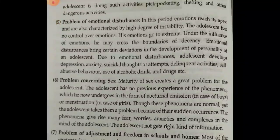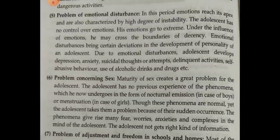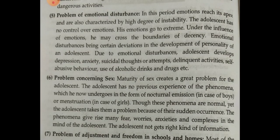Problem number five: problem of emotional disturbance. In this period, emotions are at their peak and are highly unstable. Adolescents are emotionally unstable - they cannot control their emotions, which are very extreme. Due to these emotional disturbances, the adolescent becomes a victim of depression, anxiety, and suicidal thoughts develop. They adopt abusive behavior and start taking alcoholic drinks or drugs because they do not understand their own emotions.